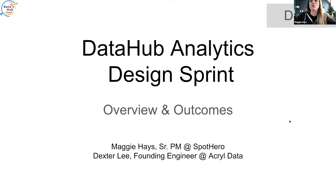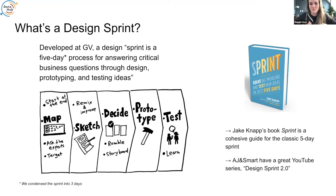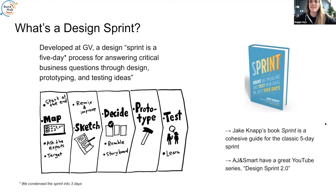If you've never heard of a Design Sprint, it's something that was created out of GV, or Google Ventures. It's basically a framework to rapidly move through discovery, ideation, solution, prototyping, and testing — solving hard problems with technology in five days. Granted, we did it in three days. There are truncated ways to do it. If you're interested in learning more, there's a book that's the main source of record, and on YouTube there's a channel called AJ and Smart with videos breaking down every session — they call it Design Sprint 2.0.